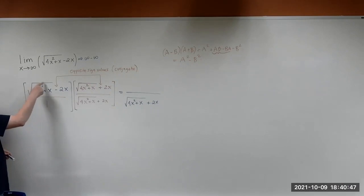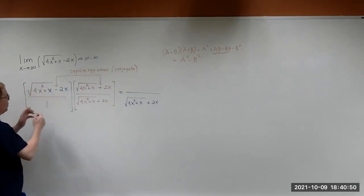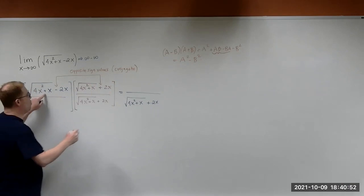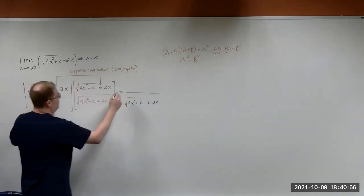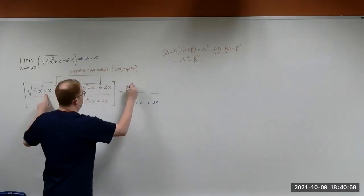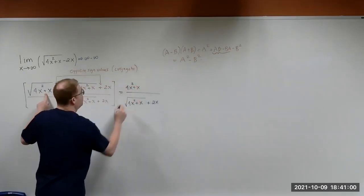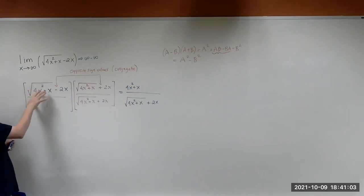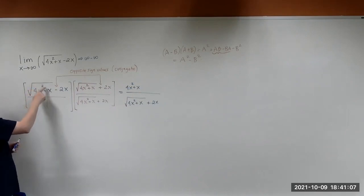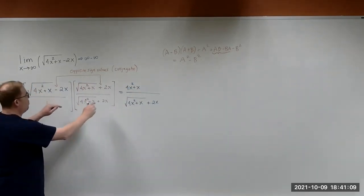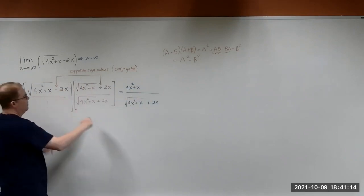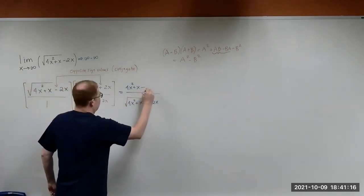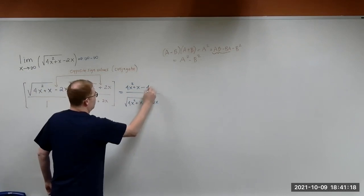So this will be A and this will be B. When we multiply this, we get 4x squared plus x — squaring A removes the square root, leaving whatever is underneath it. Then likewise, we take 2x and square it, which gives us minus 4x squared.